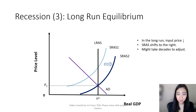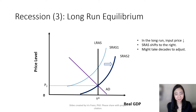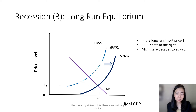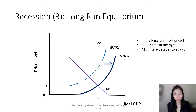Here is what happens in the long run if our government does not intervene in the recession. The bottom line is, in the long run — like after decades — our short-run aggregate supply curve will shift to the right, restoring our real GDP back to its potential.